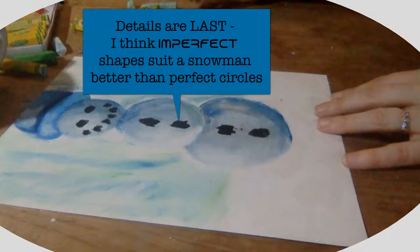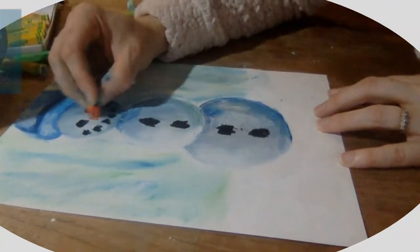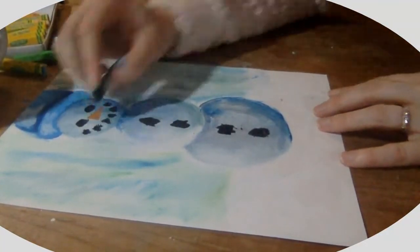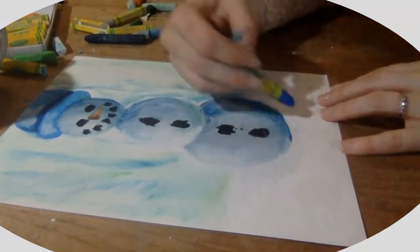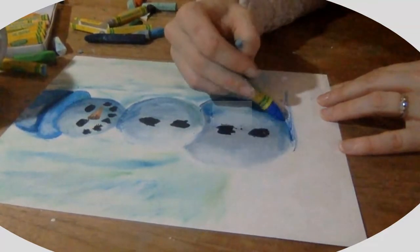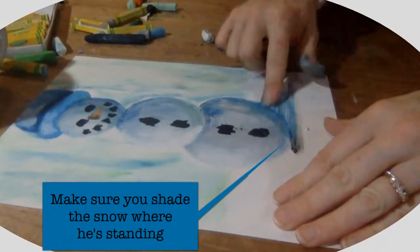Feel free to add as many details as you'd like or a creepy grin like mine. I chose to use imperfect circles for my buttons and coal. And don't forget to shade the ground where he's standing.